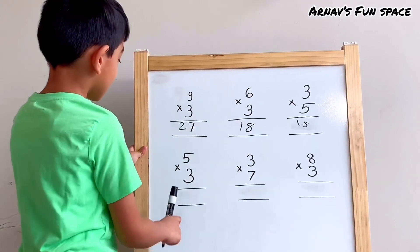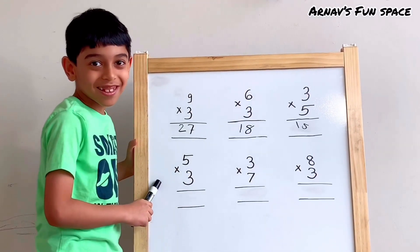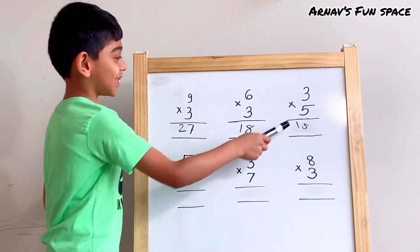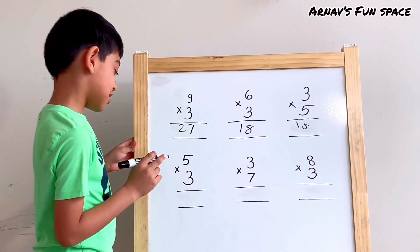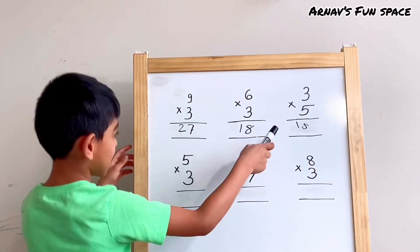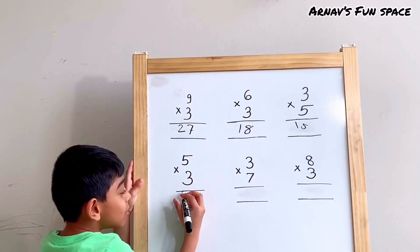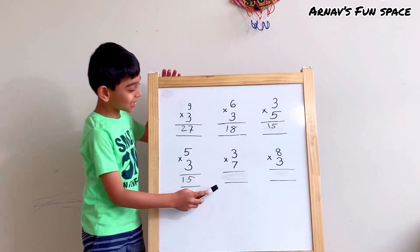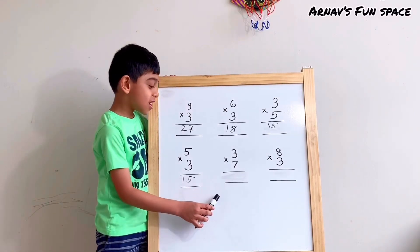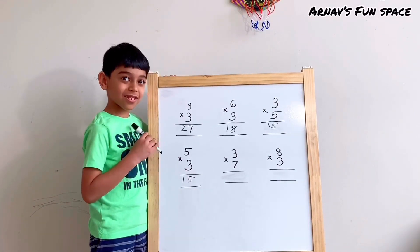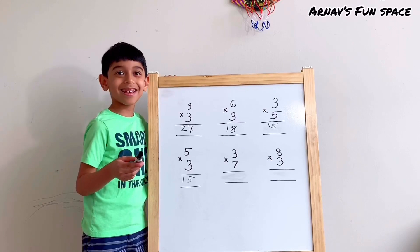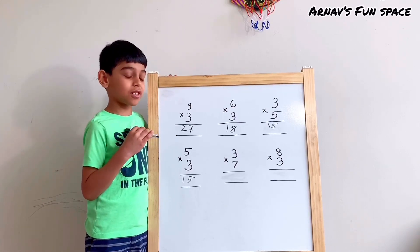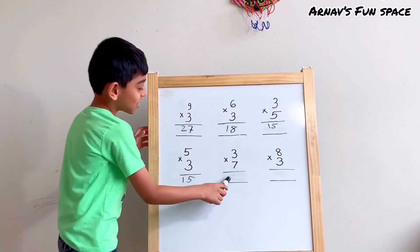The next question is 5 times 3. Oh, 5 times 3 is the same as 3 times 5. So, let's copy this. The next question is 3 times 7. I think the answer, could you guess it? Maybe it's... it is 25.